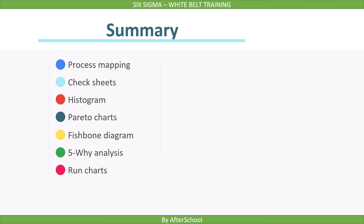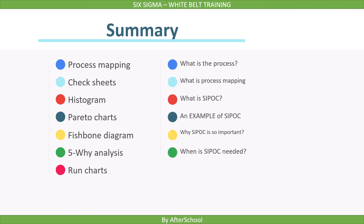To summarize, in this lecture we covered the seven basic tools of quality: process mapping, check sheets, histogram, Pareto charts, fishbone diagram, 5Y analysis, and run charts. We then covered process mapping in detail, including what a process is, what process mapping is, what SIPOC is, an example of SIPOC, why SIPOC is so important, and when SIPOC is needed. With this, the lecture ends.